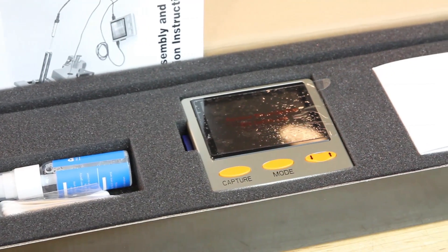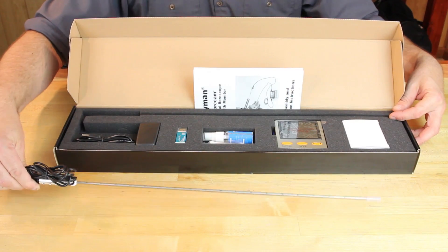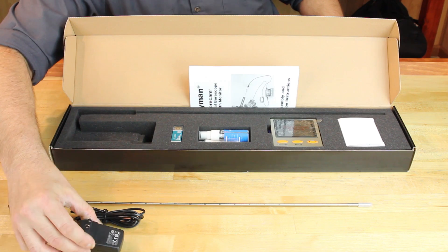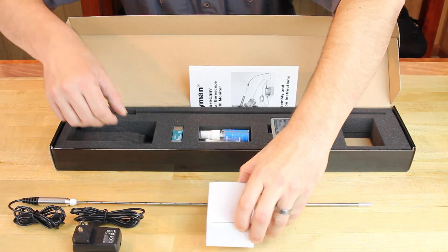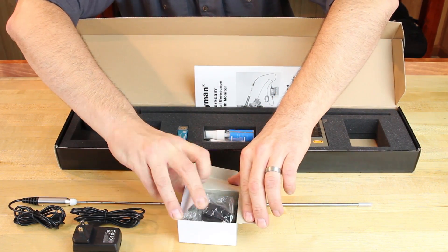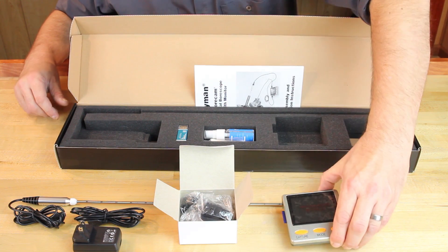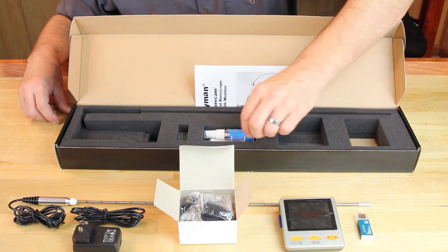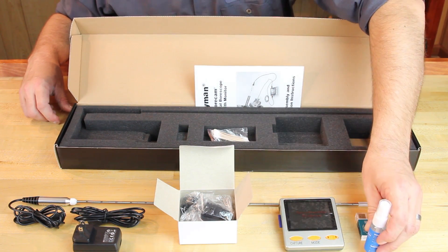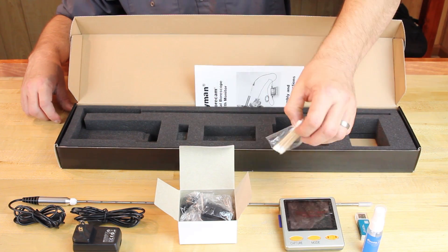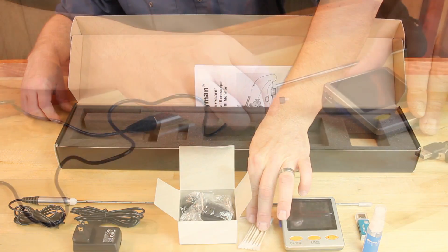Inside the box you will find a 20-inch 90-degree wand, USB power adapter with multi-voltage faceplates, a three and a half inch color monitor, SD card and card reader, lens cleaner and cotton swabs for cleaning the camera, and an instruction manual.